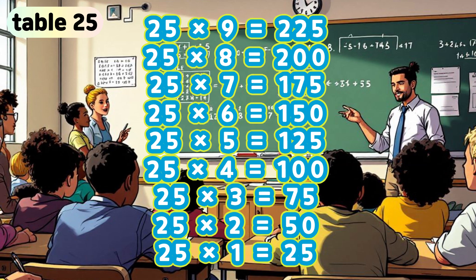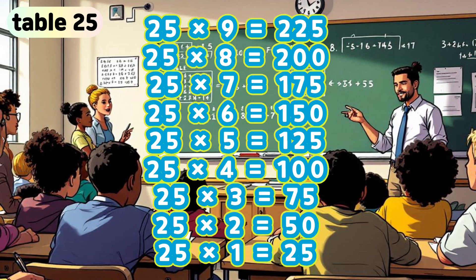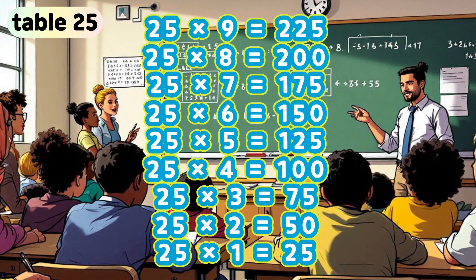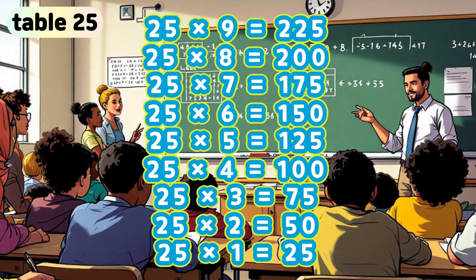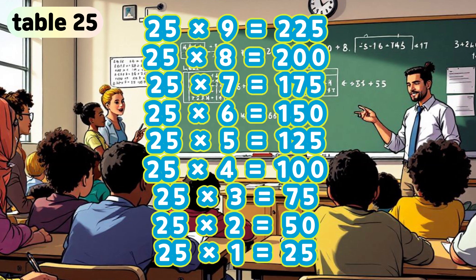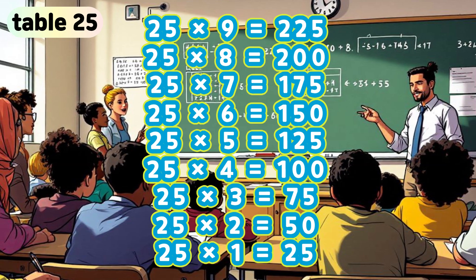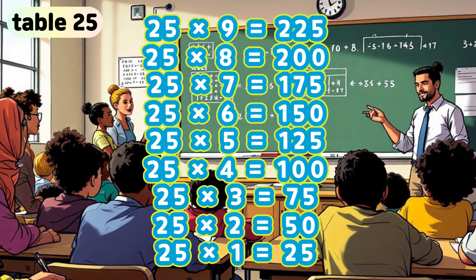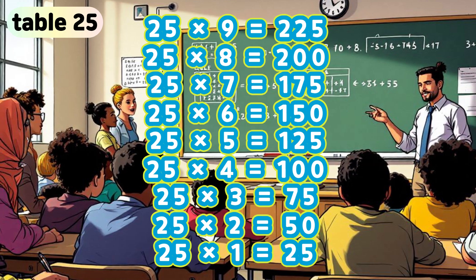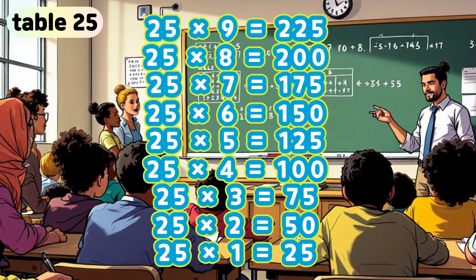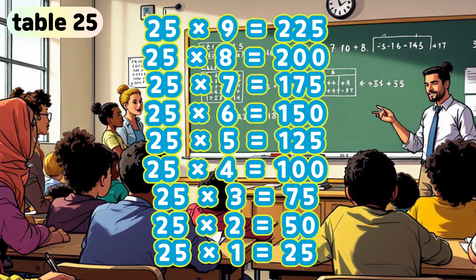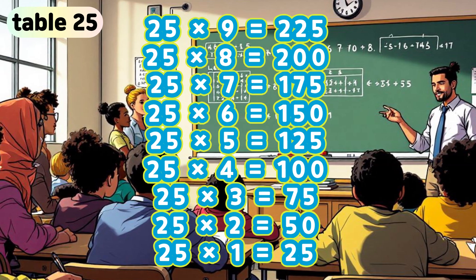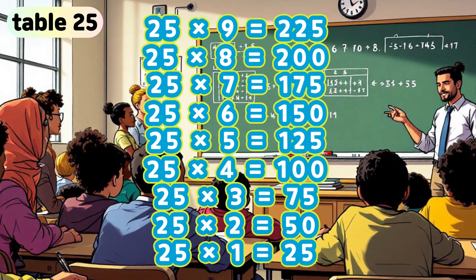Table 25. 25 times 9 is 225. 25 times 8 is 200. 25 times 7 is 175. 25 times 6 is 150. 25 times 5 is 125. 25 times 4 is 100. 25 times 3 is 75. 25 times 2 is 50. 25 times 1 is 25.